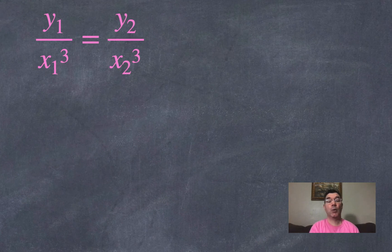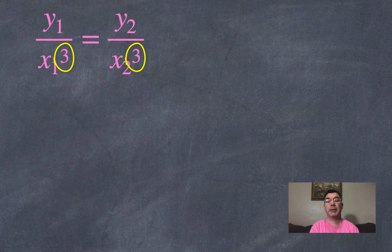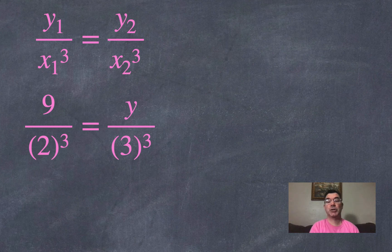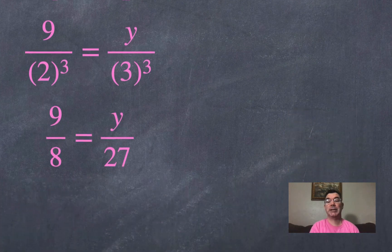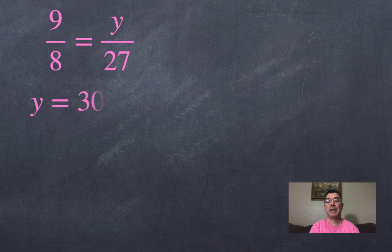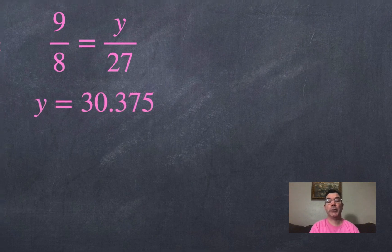And remember, y is proportional to x cubed. So my x's on the bottom both have to be cubed. So the first y was 9. The first x was 2. And the second x was 3. So I plug those values in. And I simplify. 2 cubed is 8. 3 cubed is 27. And then I cross multiply to solve. And I get that y would equal 30.375.